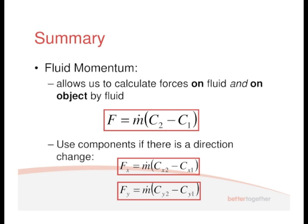Fluid momentum allows you to work out the forces on the fluid and on an object by the fluid. F equals the mass flow rate times C2 minus C1, which is the change in velocity. And if there's a change in direction, you have to use the components — the X terms and the Y terms.